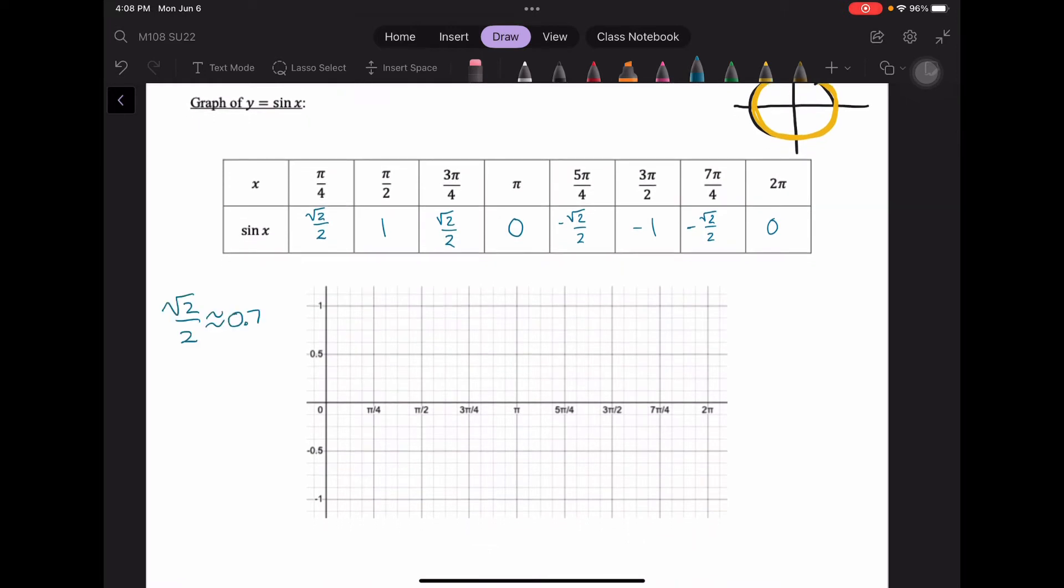I am going to round the square root of 2 over 2 to approximately 0.7. It's an irrational number that is 0.7071 and keeps going from there, but I'm just going to use about 0.7 to get a rough graph here.